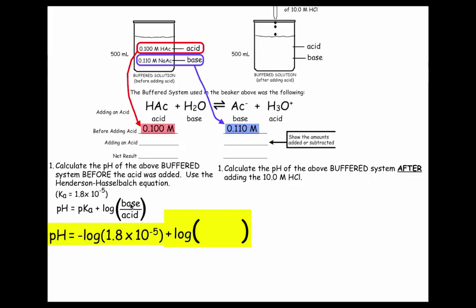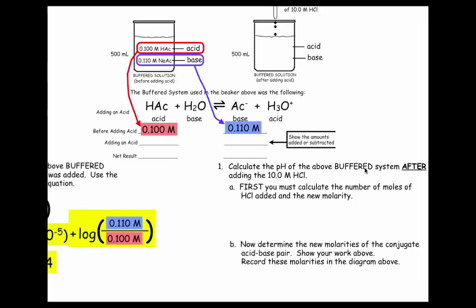Well, the base concentration was given. That's this number here, and the acid is this one, so let's plug in. Then on your calculator, pH equals 4.74 plus the log of 0.110 over 0.100. We got a pH of 4.78 before we added the strong acid. Now we want to calculate the pH after adding this acid.